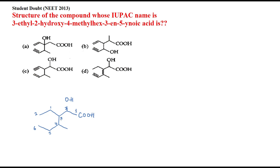3-en means there should be a double bond at position three, and 5-yn means on the fifth position there will be a triple bond. So I'll make the triple bond here. Now comparing with the options, my structure resembles option D — so D is the correct answer.